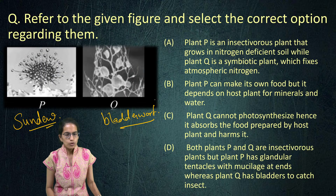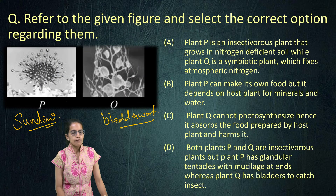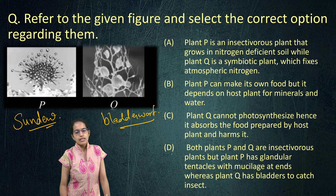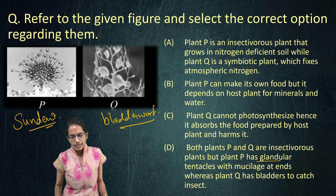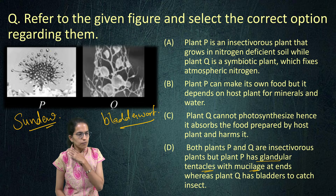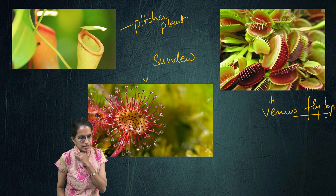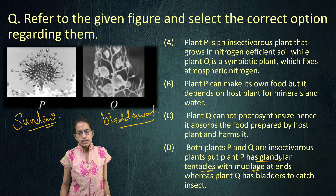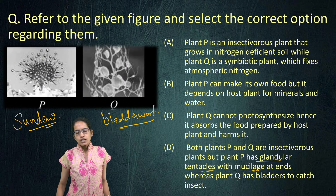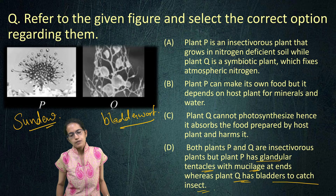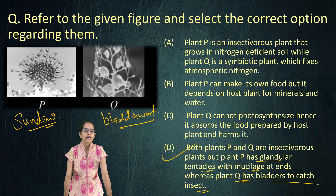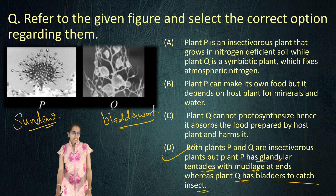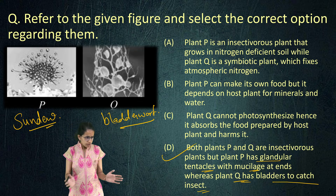Looking at the question, both P and Q are insectivores. P has glandular tentacles with mucilage at the end — as seen in the colored diagram, a jelly layer of mucilage sticks the insects. Q is the bladderwort, which has a bladder to catch insects. So option D is the right answer for this question.